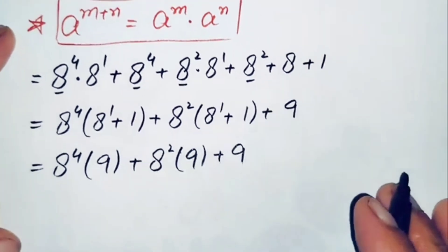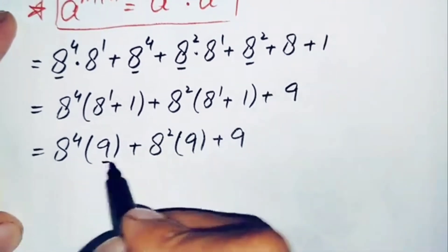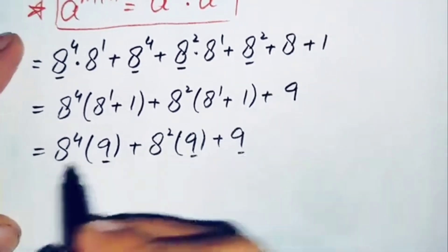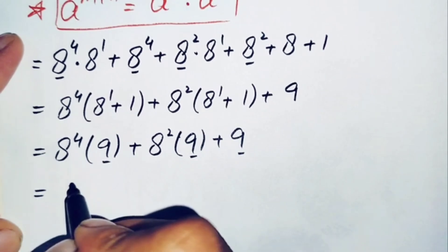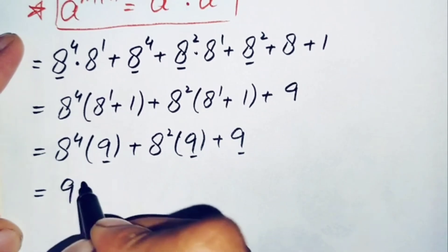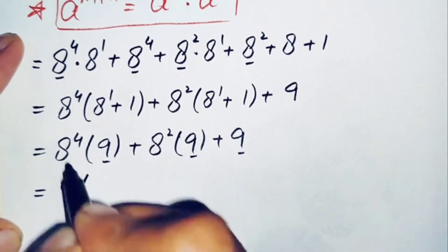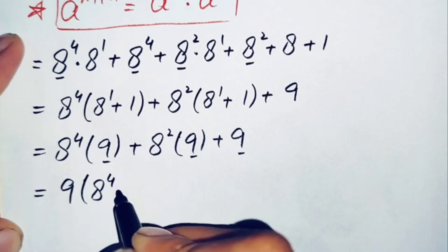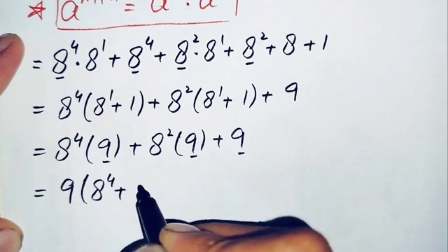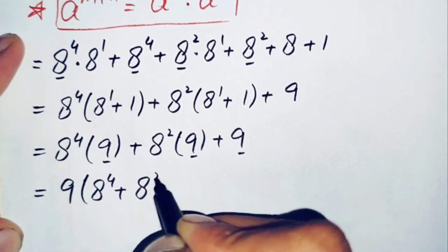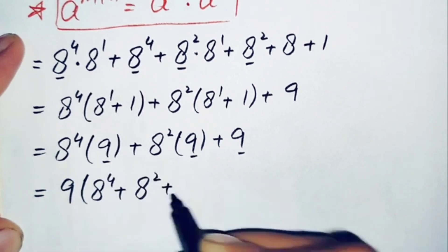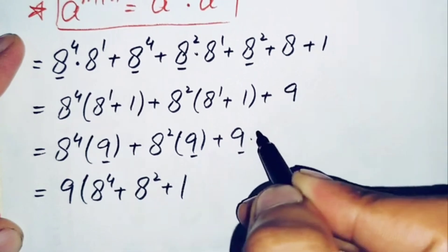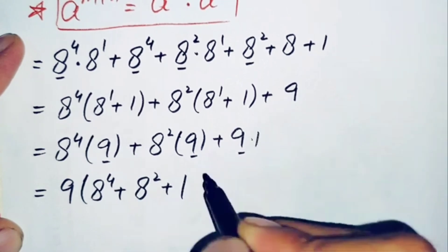Now here we will take 9 common from all the terms, because there is 9 in all the terms. So taking 9 common, this will become 9 times (a raised to power 4 plus a raised to power 2 plus 1).